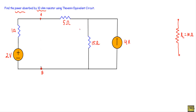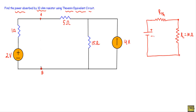We now have this linear bilateral network, which we can convert into a Thevenin equivalent circuit. If I convert this circuit, it will look like Rth in series with Vth. After drawing the Thevenin equivalent circuit, the entire circuit becomes a series circuit and we will know the value of current flowing through the load resistor RL.